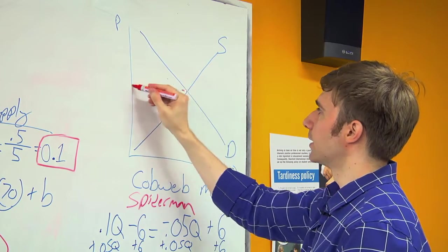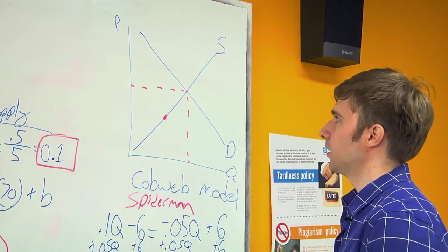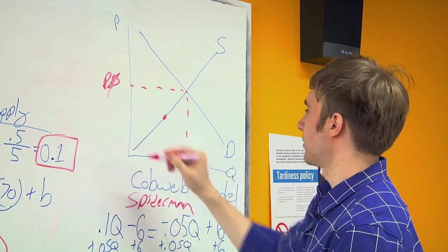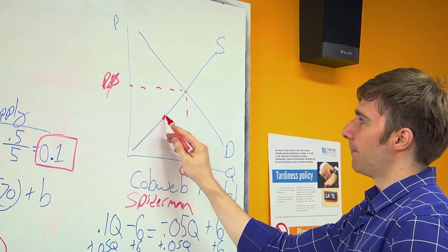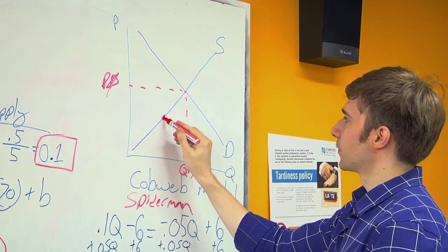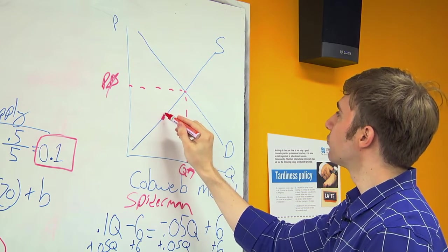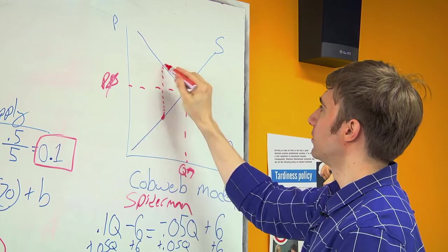Though this is our equilibrium. That would be my P star and my Q star. At this amount, this supply, this is what people are willing to pay.